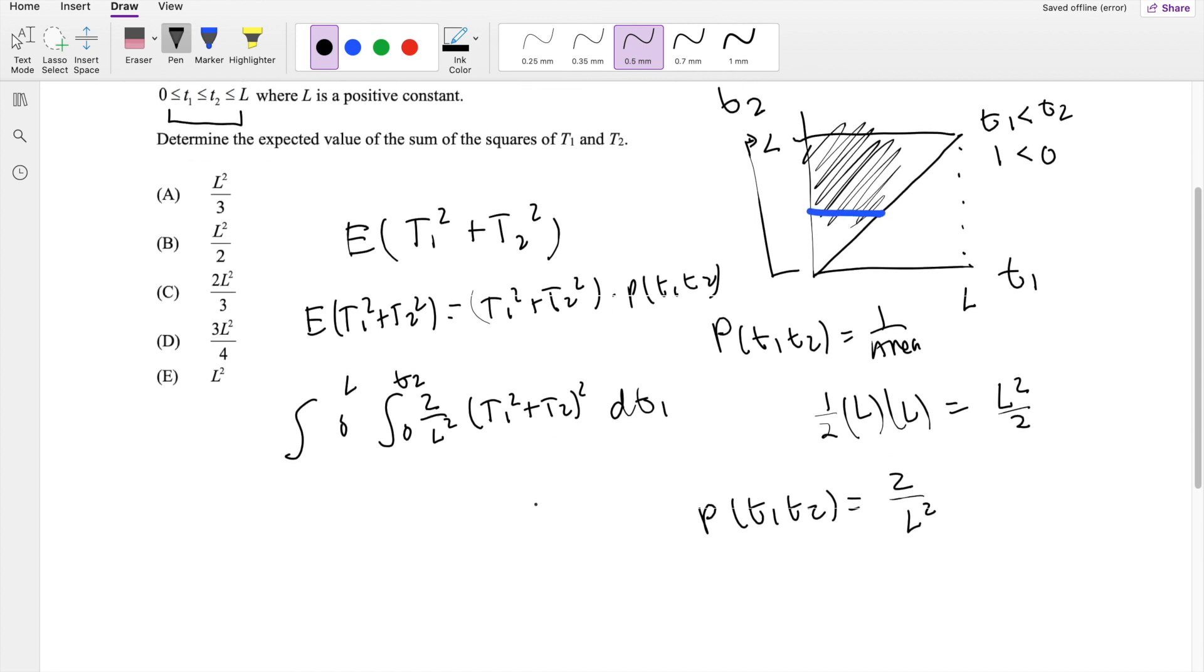So then taking that derivative in respect to T1, 2 over L squared is just constant, I'm going to throw that outside. So then this will be equal to T1 cubed, 1 third, plus T2 squared times T1, integrating from 0 to T2 for T1.